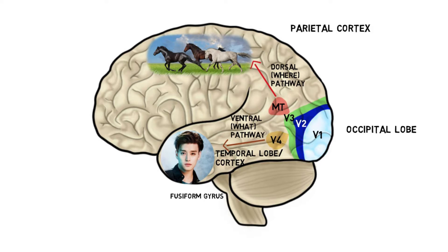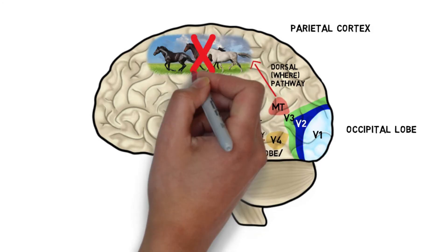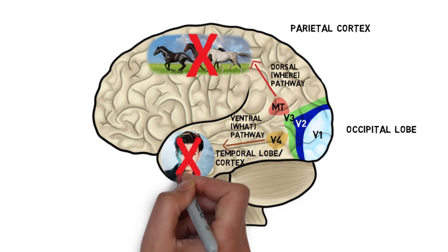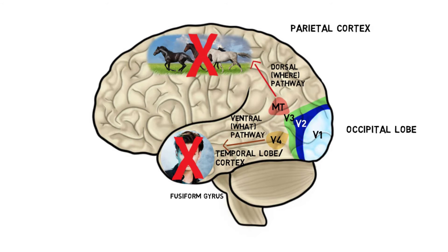For example, damage to area MT results in loss of motion sensitivity whilst leaving form detection and object recognition unimpaired. Conversely, loss in areas along the ventral pathway results in form deficits and face recognition impairment but not motion processing.